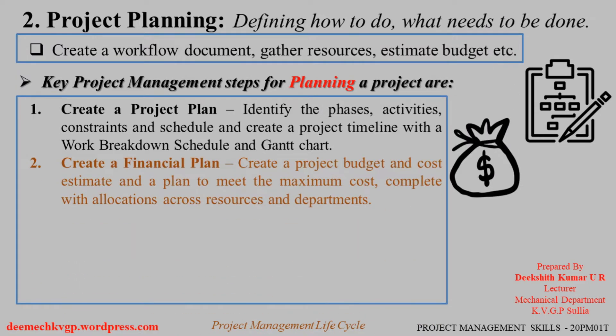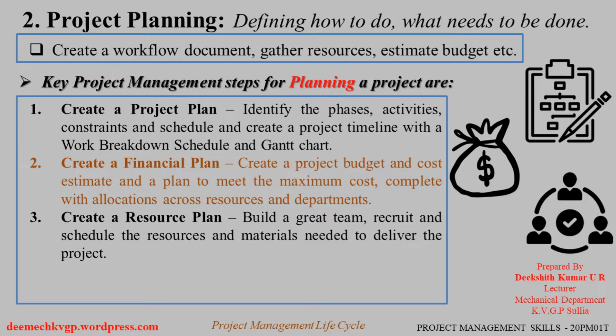Create a financial plan — create a project budget and cost estimate, and a plan to meet the maximum cost, with complete allocations across resources and departments. The exact cost estimation is carried out in planning using proper work breakdown, so that the cost overrun can be avoided. Create a resource plan — build a great team by recruiting and scheduling the resources and materials needed to deliver the project, hiring the right person and identifying the right resources and materials to do the right job.